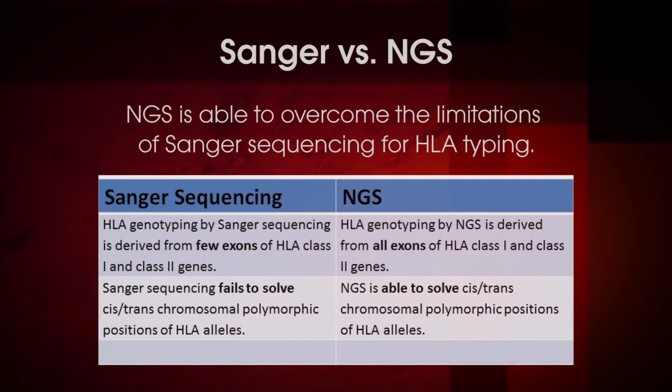Recent advances in next-generation sequencing, also known as NGS, have shown that complete, unambiguous, and high-throughput HLA typing is now possible. High-resolution HLA typing by NGS is able to overcome the limitations of Sanger sequencing by performing long-range clonal sequencing reactions.